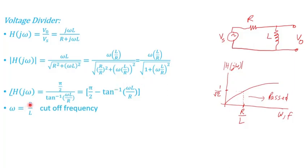The cutoff frequency ω equals R divided by L — resistance divided by inductance. If I graph the magnitude versus frequency ω (sometimes expressed in hertz or radians per second), I can see that this filter will only pass signals that come after the cutoff frequency R/L.